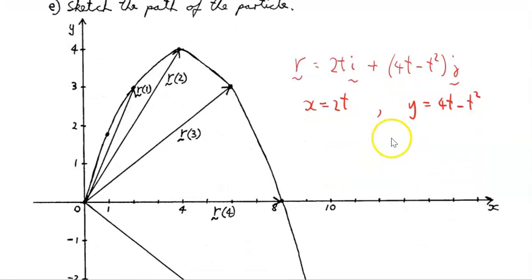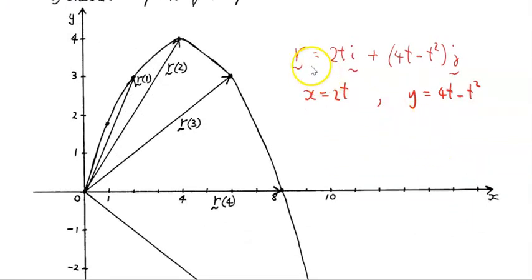Reminding ourselves that the position vector is 2ti + (4t - t²)j where x = 2t, y = 4t - t². Well, at t = 0, all of this is 0, so the particle is at the origin. At t = 1, we have x = 2, and y = 4 - 1 = 3. So we have (2, 3). The position vector is there, so that's where the particle is. At t = 2 seconds, we have 2 times 2 = 4. So we have 4 here. And 4 times 2 = 8 minus 4 = 4. So we have (4, 4) for our particle.